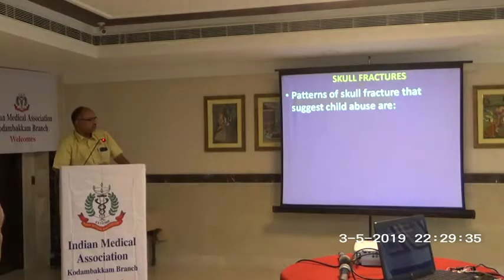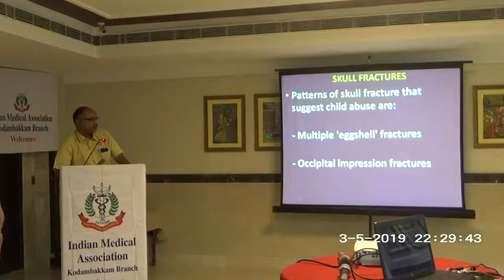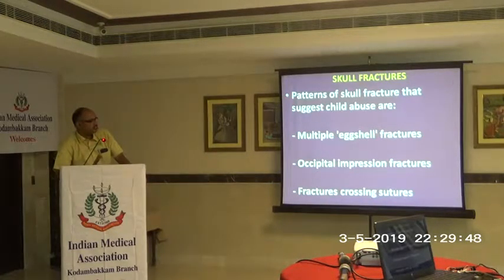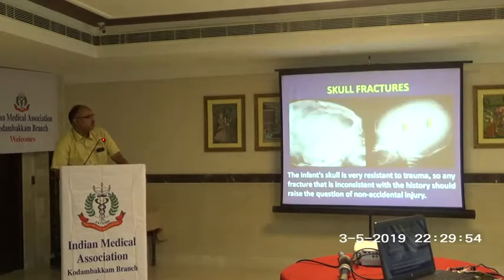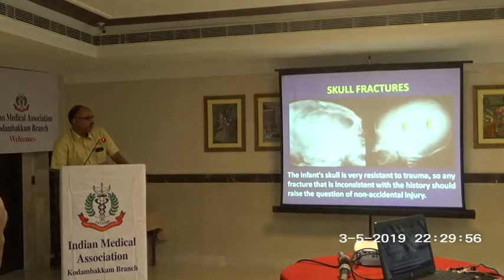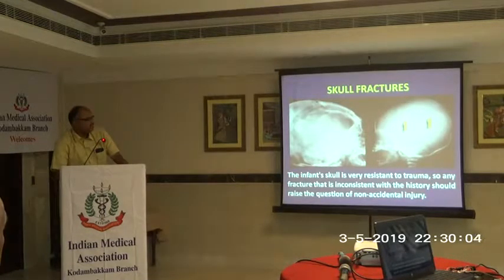The pattern of skull fracture that suggests child abuse includes diastatic fractures, occipital impression fractures, and fractures crossing the suture. These all suggest it is not due to accidental fall — it is due to child abuse. The skull is very resistant to trauma, so any fracture that is inconsistent with the history should raise the possibility of non-accidental injury.